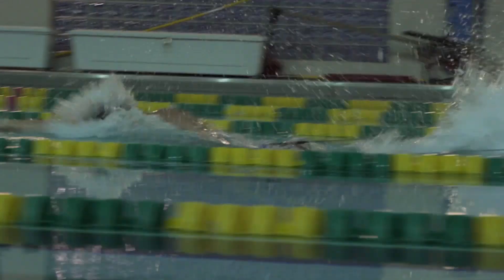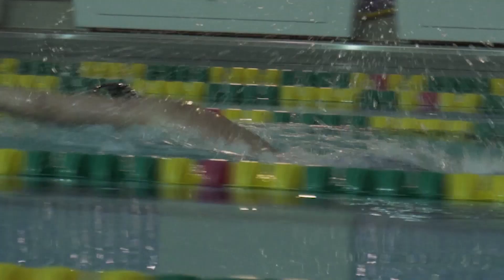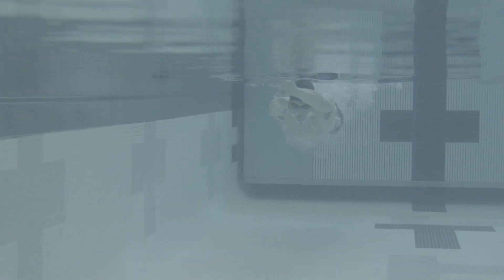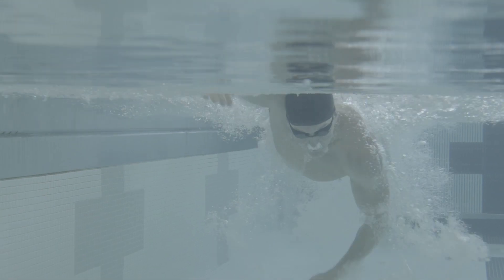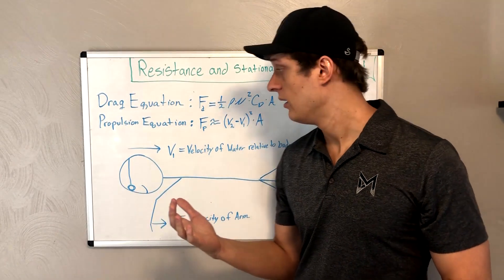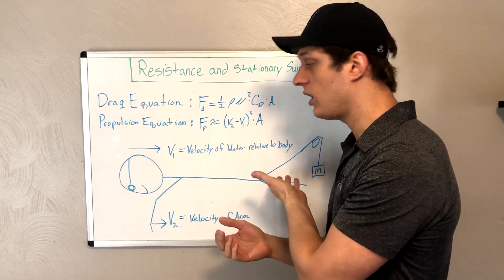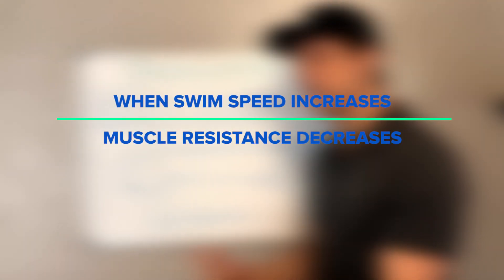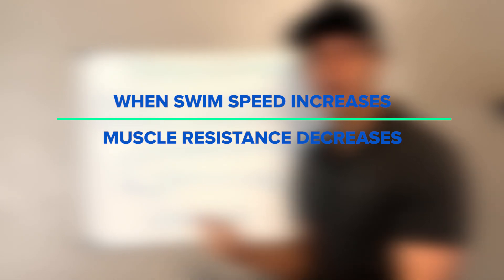Okay, so from the fluid dynamics equations that we've solved for here, you can see that having high velocity of the arm, having big arms, and having good technique all increase your propulsive force down the pool, while the velocity of the water, or actually your swimming speed in this case, will decrease the propulsive force that you are able to generate.